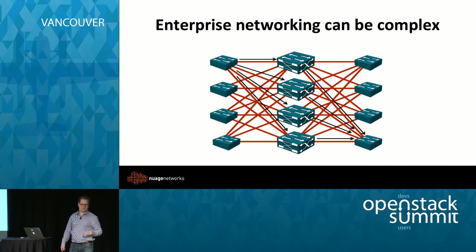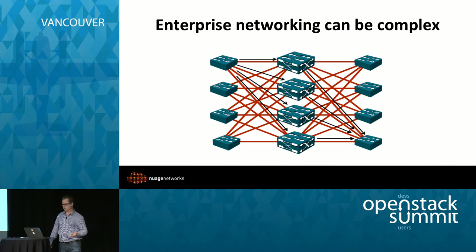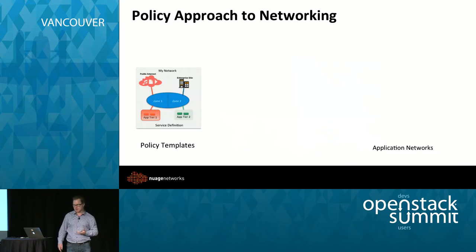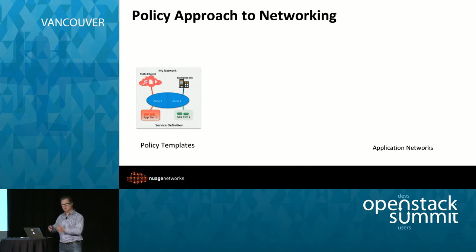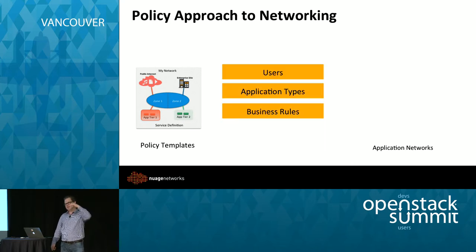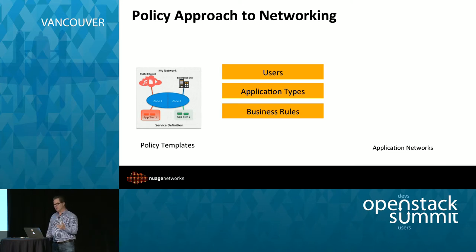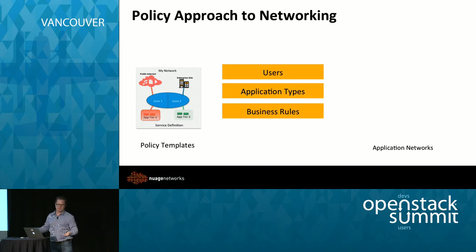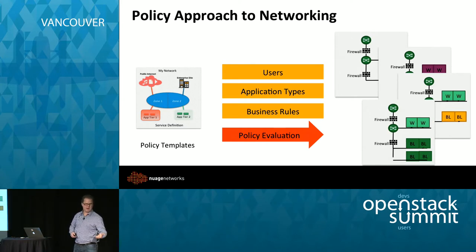Networking environments are highly complex. How do we manage those going forward with this new way of doing business and technology? We believe a policy-based approach to networking really is the key. Starting with policy templates on the left, where we can define them once and then use them many times across the organisation — like copy-paste in Word. We see with group-based policy, an open source project and part of the OpenStack project, a set of commonalities we can define with that abstraction: users, application types and business rules. This allows flexibility with simplicity within this complex environment.